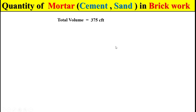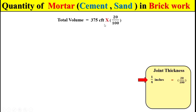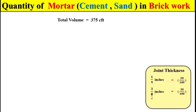If the total net brickwork volume is 375 cubic feet, we need to find the total quantity of mortar in this volume. Remember that the total quantity of mortar depends on the joint thickness. If we provide a joint thickness of 1/4 inch, we take 20% of the total brickwork volume. If we provide a joint thickness of 3/8 inch, we take 30%. If we provide a joint thickness of 1/2 inch, we take 40% of the total brickwork volume.